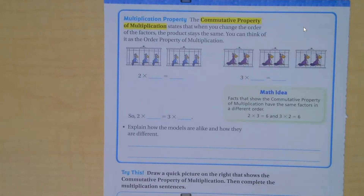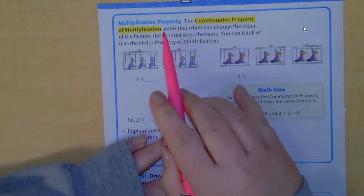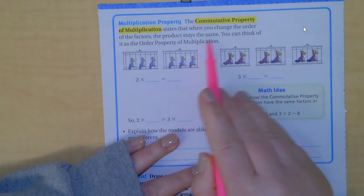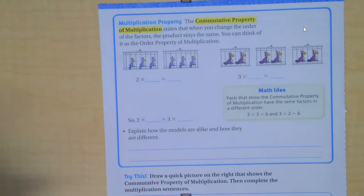Today we're going to talk about the commutative property of multiplication. If you remember, the commutative property of addition stated that the order doesn't matter — the sum remains the same. We talked about this on Monday when we did our 3.5 lesson. The commutative property of multiplication states the same thing. When you change the order of the factors, the product remains the same. You can also think of it as the order property of multiplication.